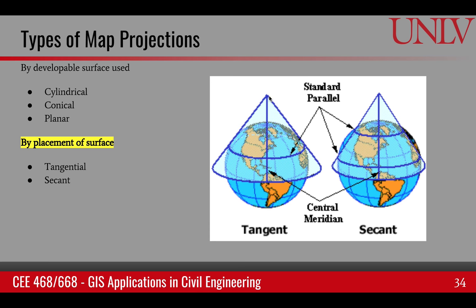Another classification is based on the placement of the surface. If the surface is just barely touching the earth, it's called a tangential projection. But if it actually crosses the surface of the earth, it's called a secant projection. Wherever it intersects or is tangent to the earth is called a standard parallel, or if it's a meridian, it's called the central meridian.